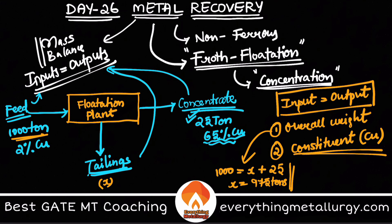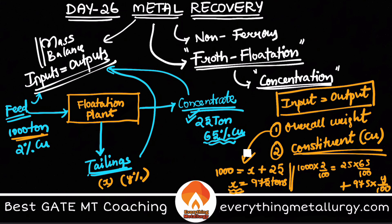Similarly, we can do a constituent-based balance. The weight of copper in the input must equal the weight of copper in the outputs. Let y be the percentage of copper in the tailings. So we write: 1000 × (2/100) = 25 × (65/100) + 975 × (y/100). From this equation you can easily calculate y, the copper percentage in tailings.